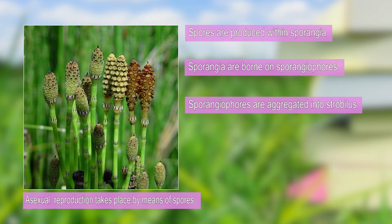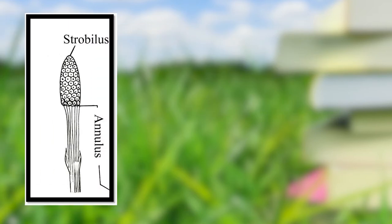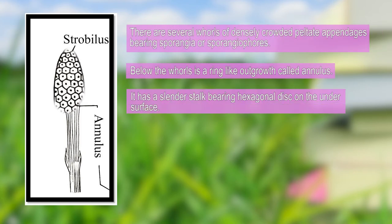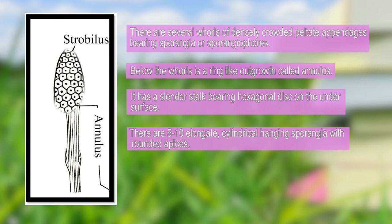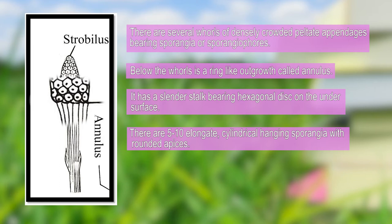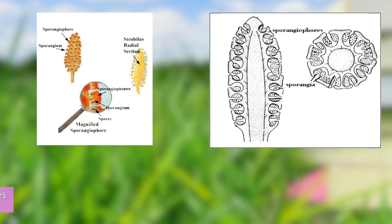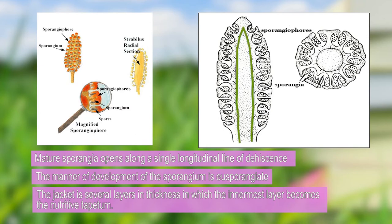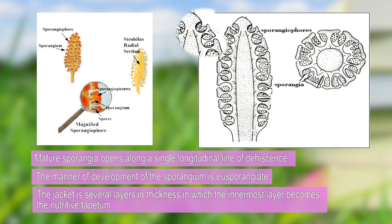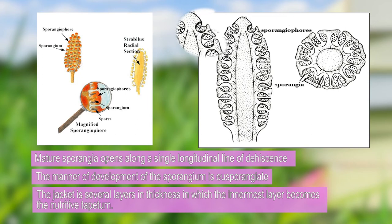Here is a single figure of the strobilus. It consists of crowded, peltate appendages bearing the sporangia — the sporangiophores. At the bottom of the strobilus there is a rudimentary structure known as the annulus. In a section of the sporangiophore, the middle portion is the axis of the strobilus. The sporangiophore has a peltate disc, and the sporangia are borne on this specific portion. The dehiscence of the sporangia occurs in a single longitudinal line.